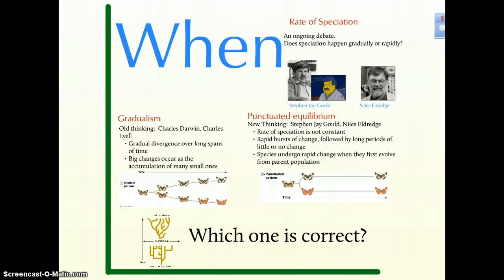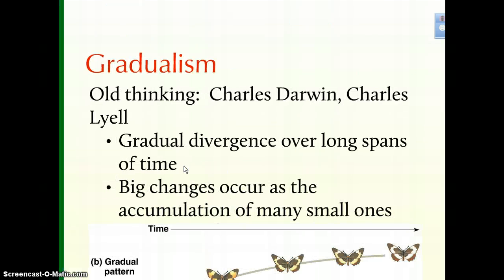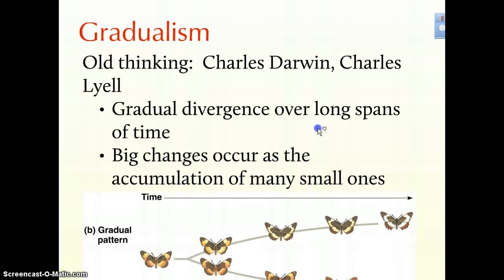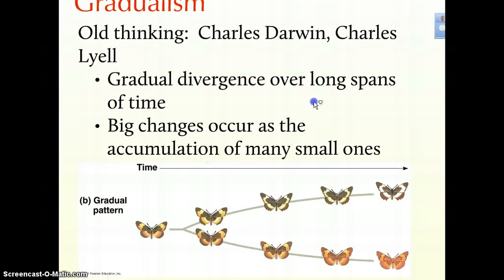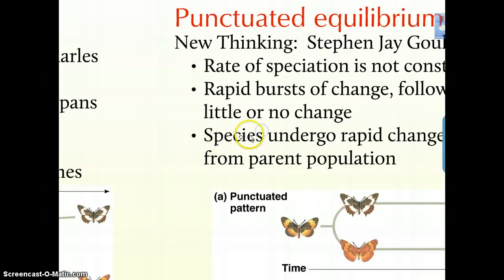The final important question is at what rate does this speciation occur. The traditional thought focuses on gradualism — the idea being that over time, as changes occur in the environment, you see steady changes in the evolution of new species. You see some evidence of this in the fossil record, where there is a slow, steady, progressive change in features.